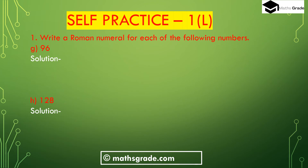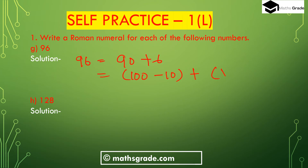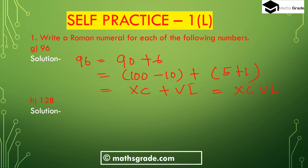Part (g): 96. We write 96 as 90 plus 6. Here 90 is 100 minus 10, so we write X before C giving XC. And 6 is 5 plus 1, which is VI. Since subtraction is involved for 90, we write X first then C. So 96 in Roman numerals is XCVI.